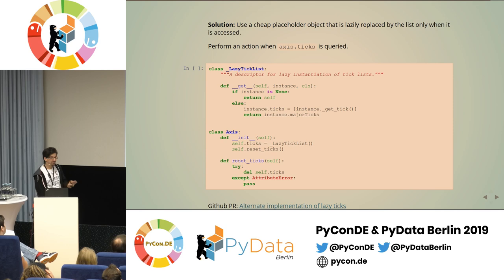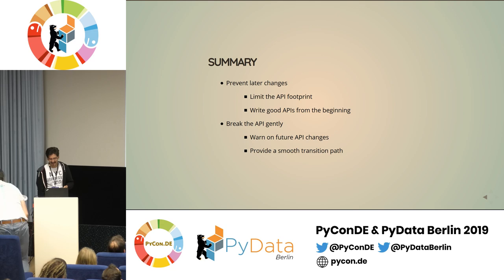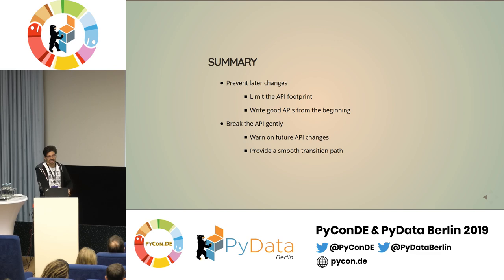So in conclusion: try to prevent later changes by limiting the API and writing good API from the beginning. If you have to break things, do it gently. Warn your users, give them time to adapt, and provide a smooth transition path.